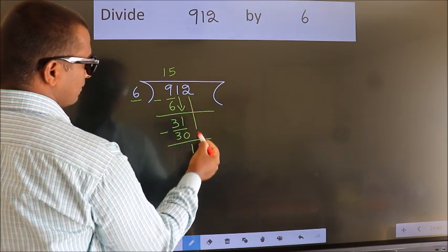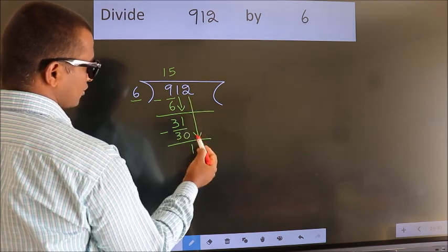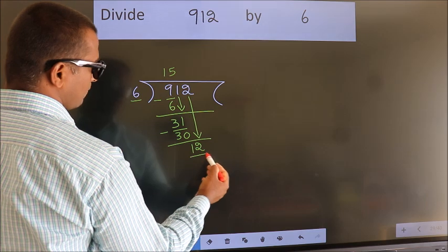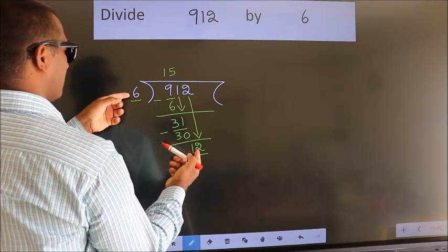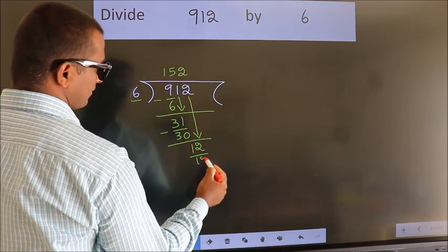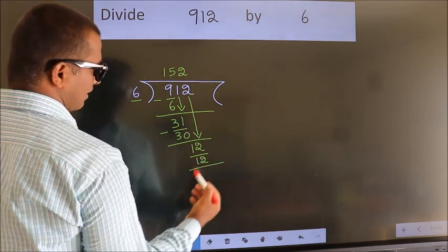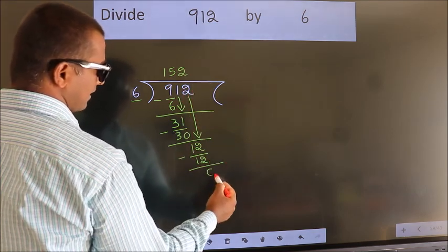After this bring down the beside number. So 2 down. So 12. When do we get 12 in 6 table? 6 times 2, 12. Now we subtract. We get 0.